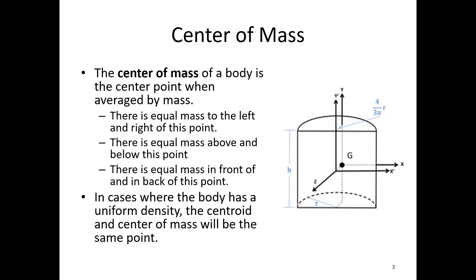It's only when you have variable density — if you've got densities that change with location — that you're going to get a distinction between center of mass and centroid. But a lot of things are made of a single material, so we will sometimes treat the centroid and center of mass points as interchangeable because they often end up at the same point.